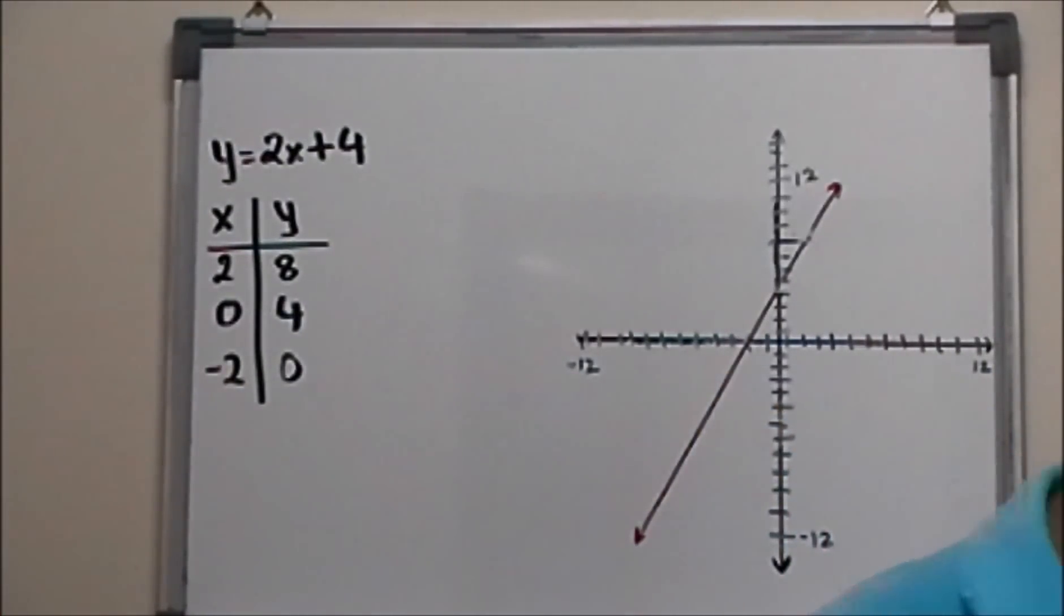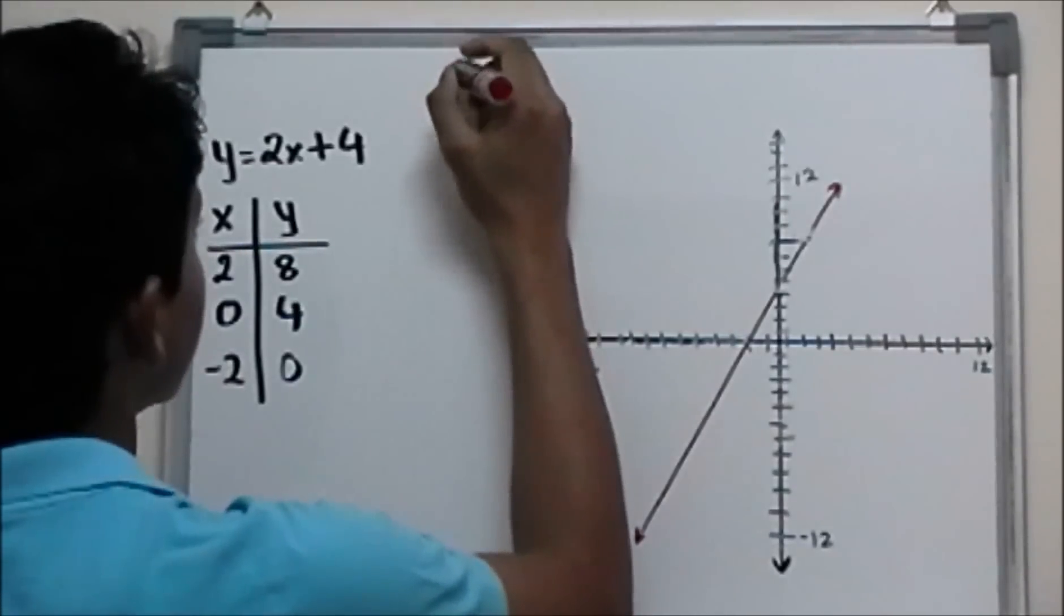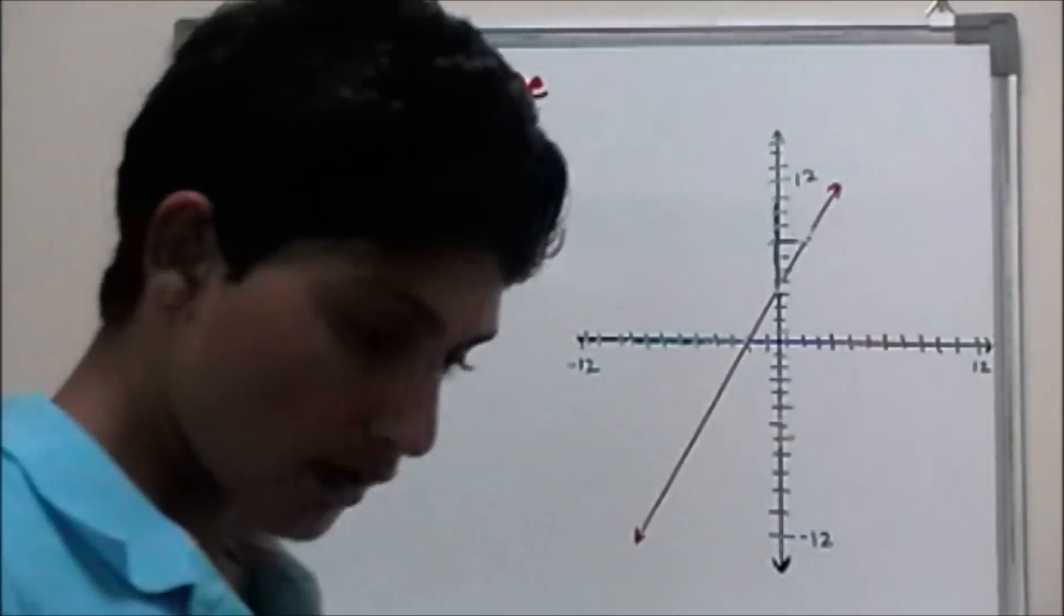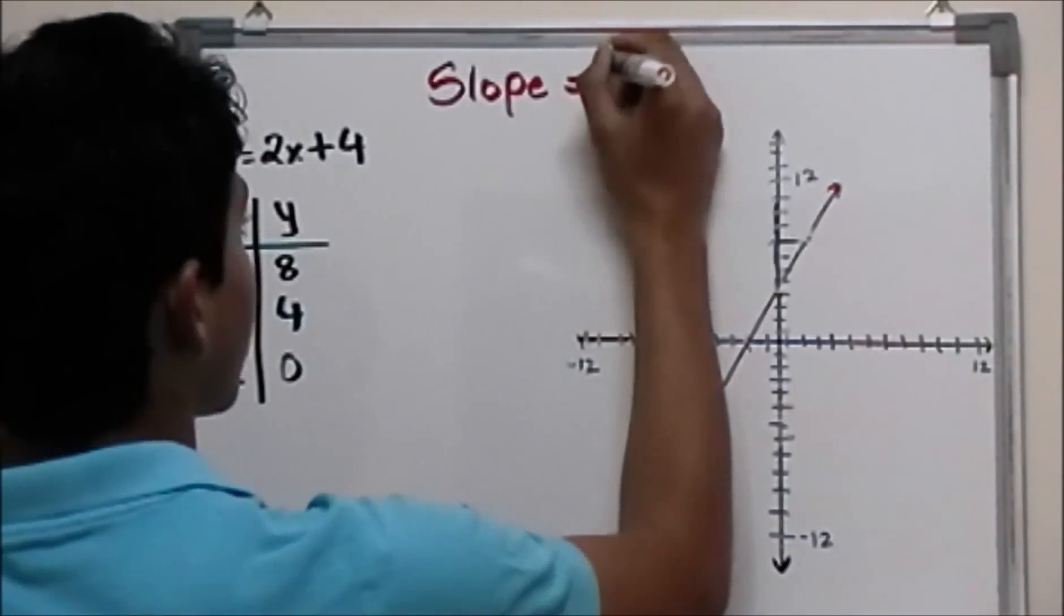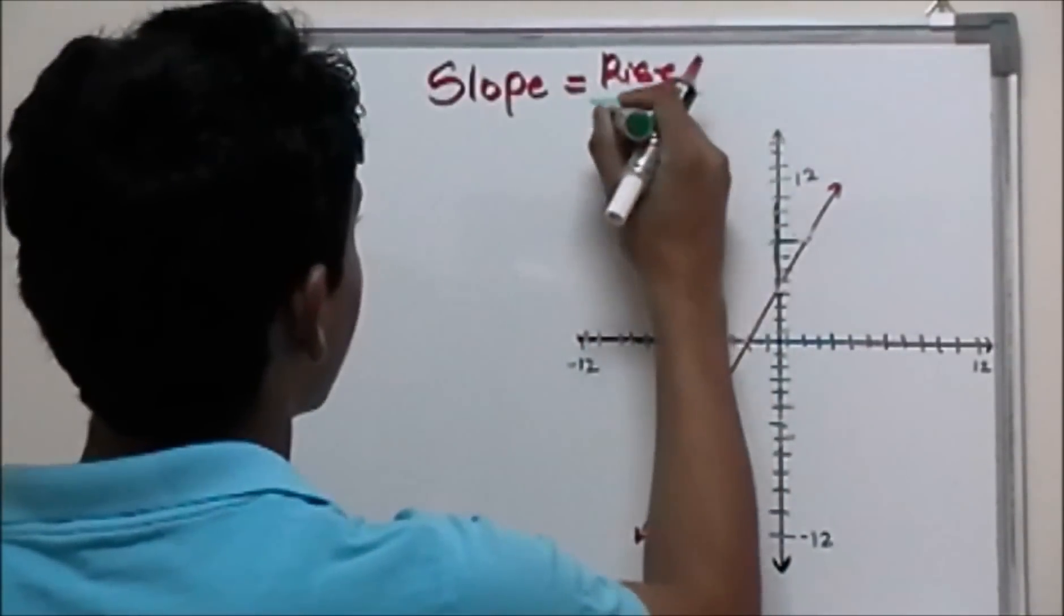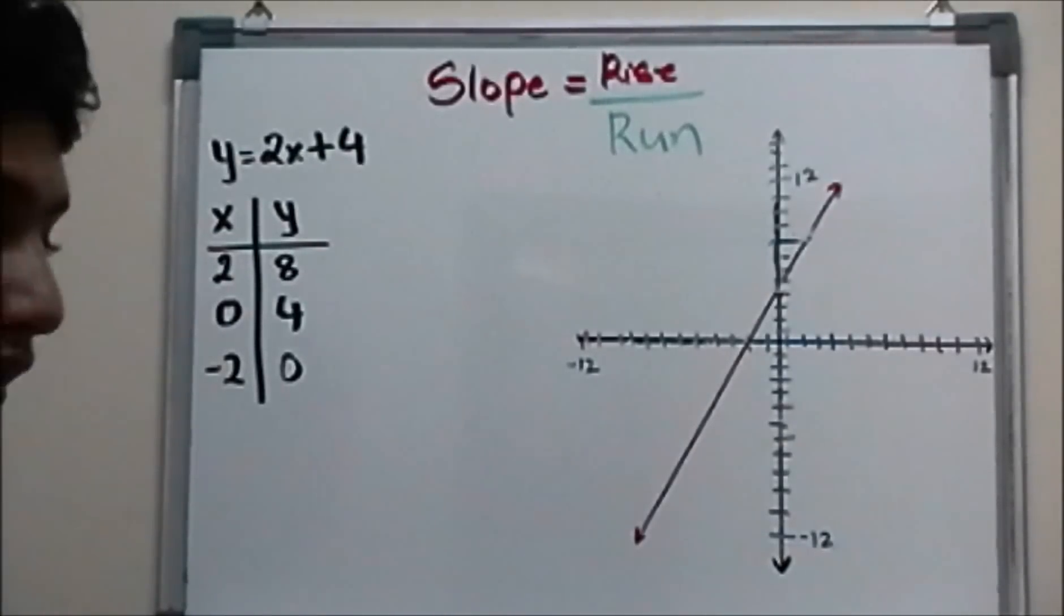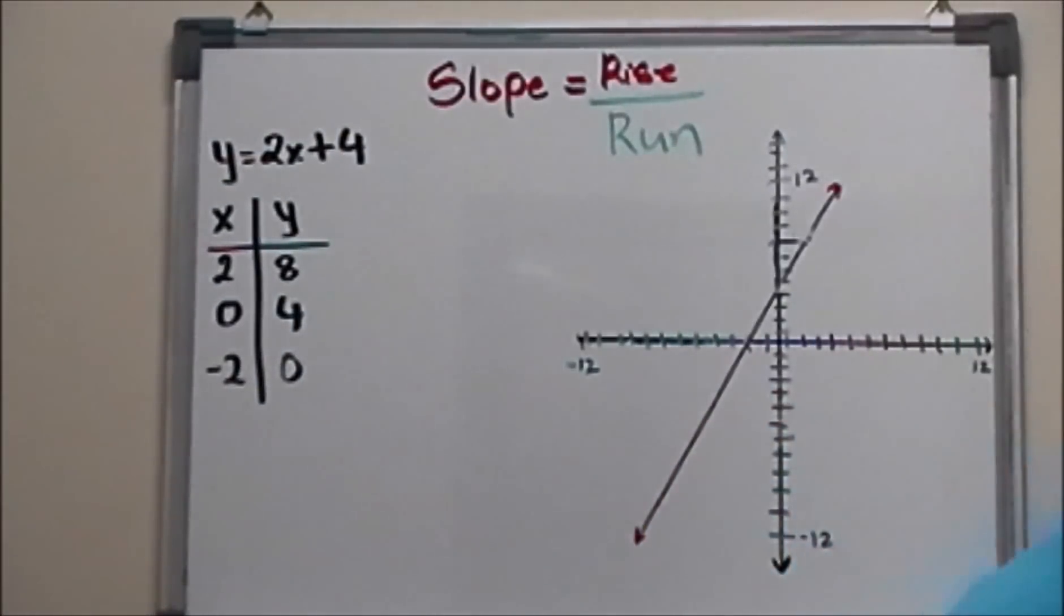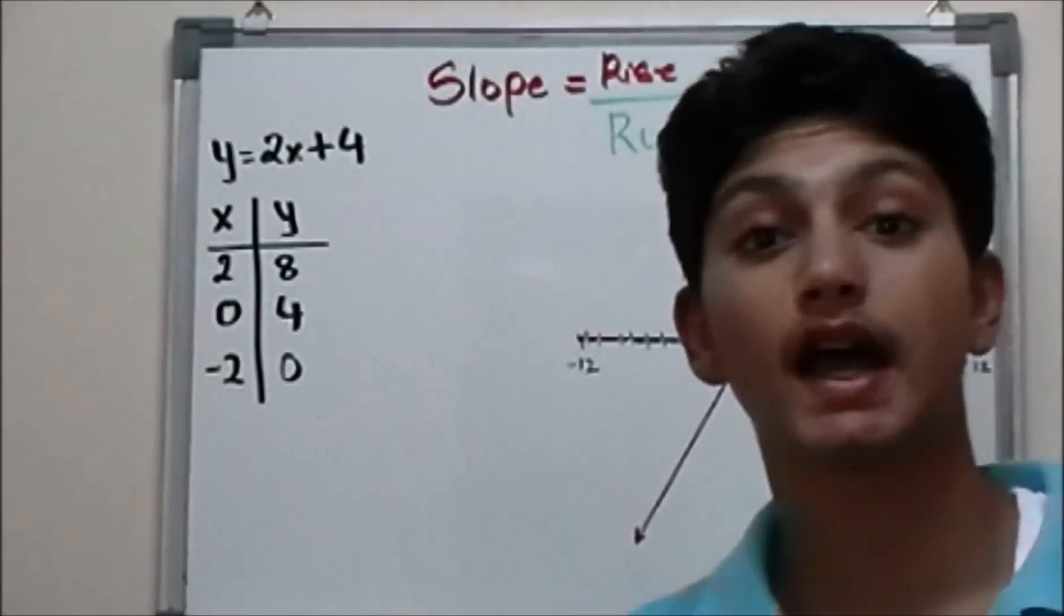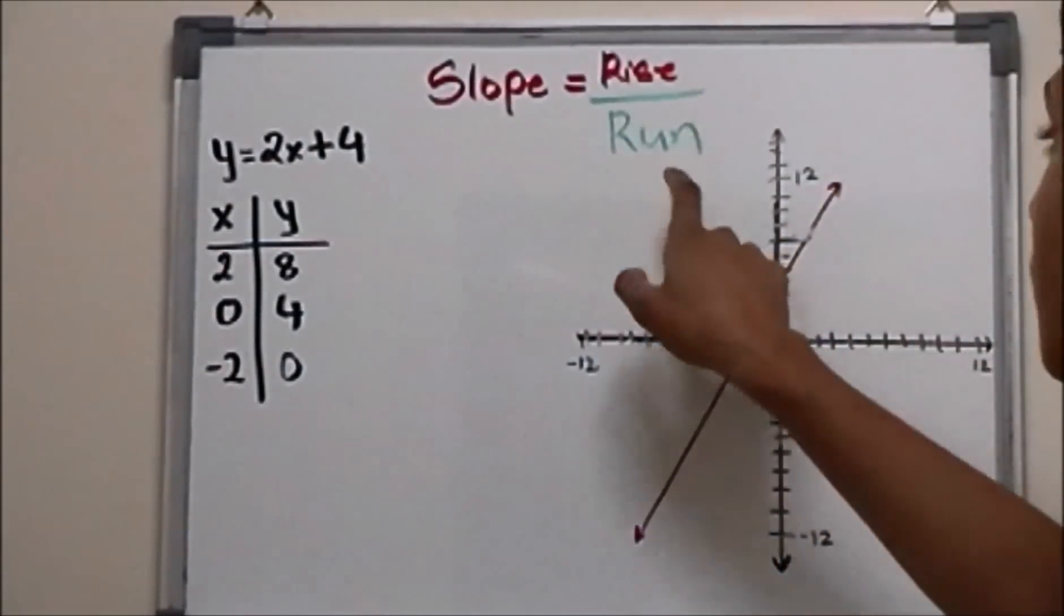Now let's talk about the steepness of a line that we mathematically call a slope. Slope of a line, slope of any line is equal to rise over run. Slope is what we need to calculate to find the steepness of the straight line.